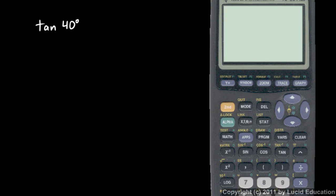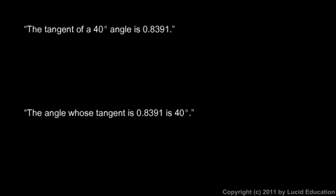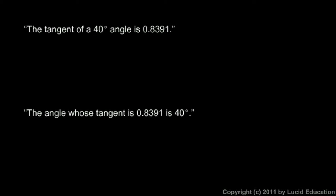Now let's talk about inverse tangent — we'll see this on the calculator and also talk about what it means. Let's start with the tangent of 40 degrees. This is pretty easy on the calculator; just type in tangent of 40 and press enter. It comes out to .8391. So the tangent of 40 degrees is .8391. In English, the tangent of a 40 degree angle is .8391, and mathematically we write it as tangent of 40 degrees equals .8391.